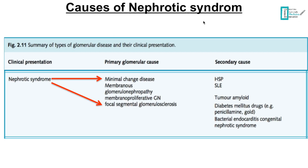What can cause nephrotic syndrome? We have primary causes and secondary causes. For the primary cause, the most common one in children is minimal change disease, and in adults it is focal segmental glomerulosclerosis.